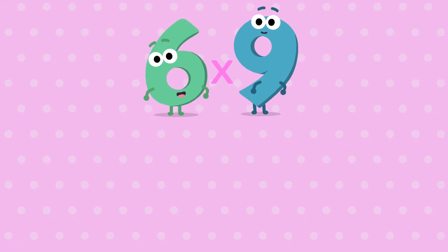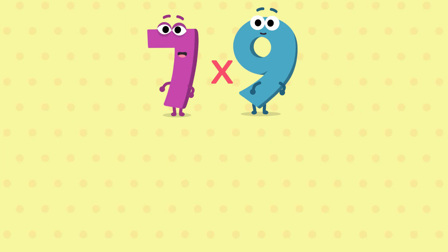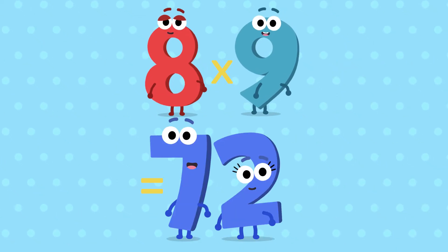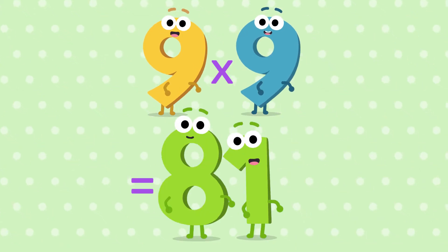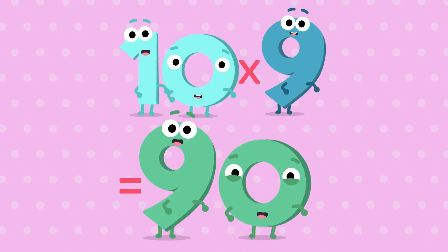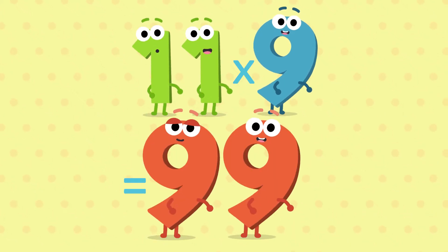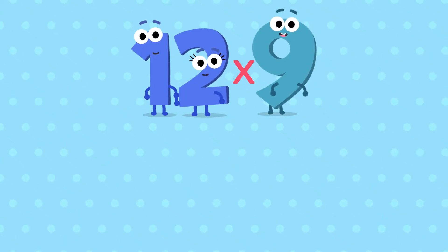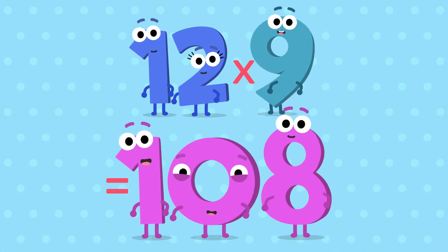6 nines are 54, 7 nines are 63, 8 nines are 72, 9 nines are 81, 10 nines are 90, 11 nines are 99, and 12 nines are 108.